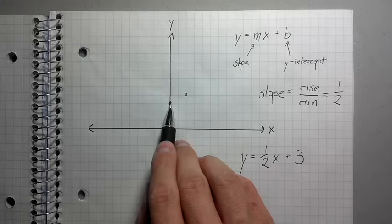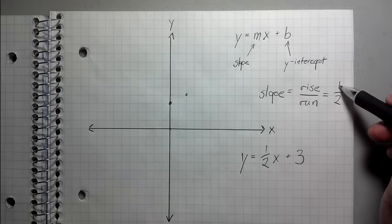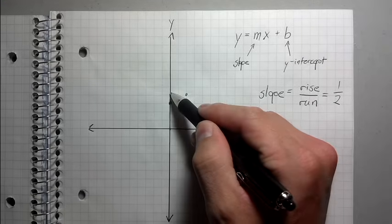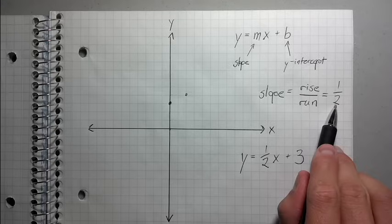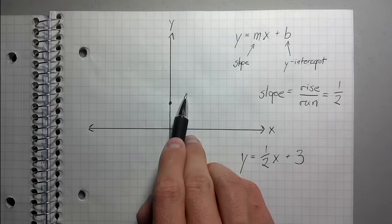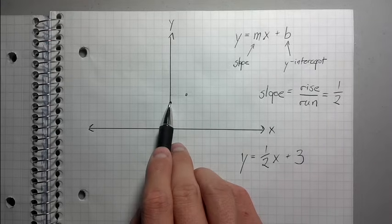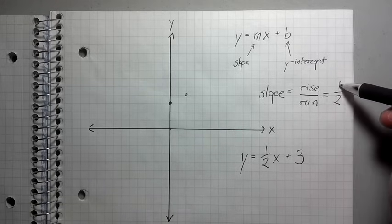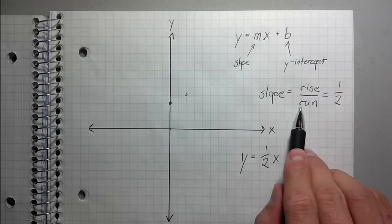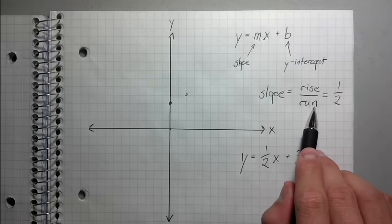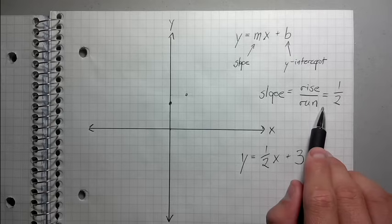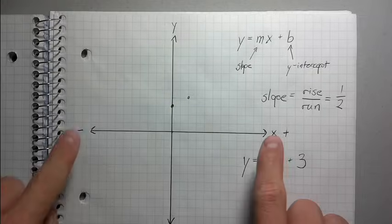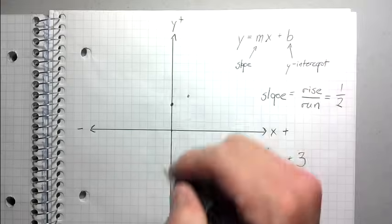The reason I went up and right is because both numbers are positive. Positive 1 means up, negative 1 means down. Positive 2 would mean right, like we did, and negative 2 would mean left. That's very important. In terms of rise: positive means up, negative means down. In terms of run: positive means right, negative means left. The positive direction for x is right, the negative is left; for y, positive is up and negative is down.